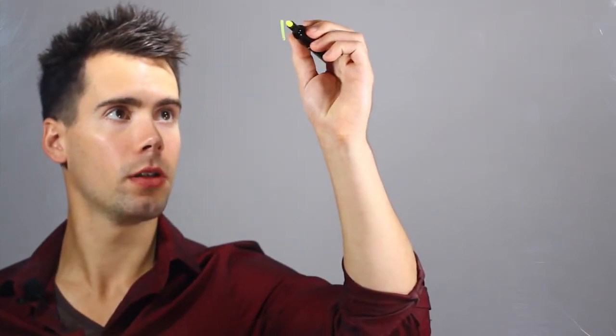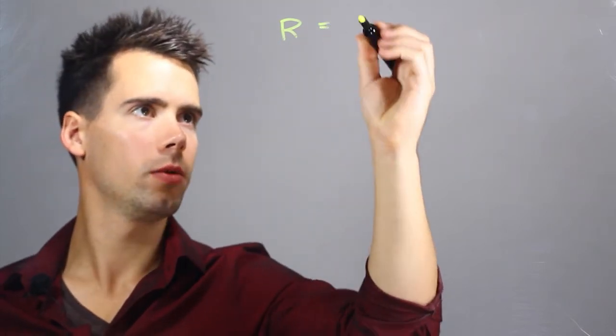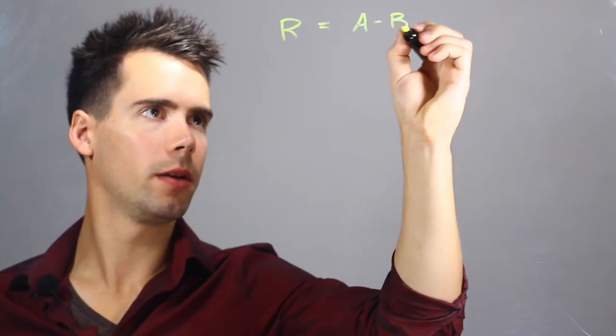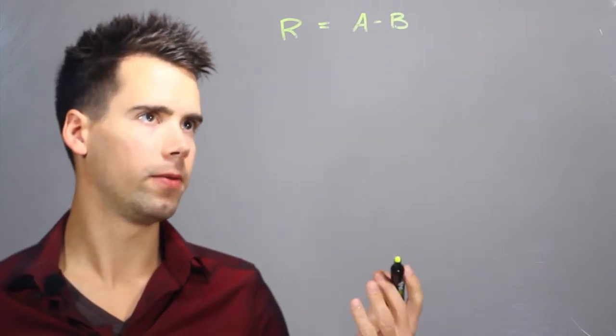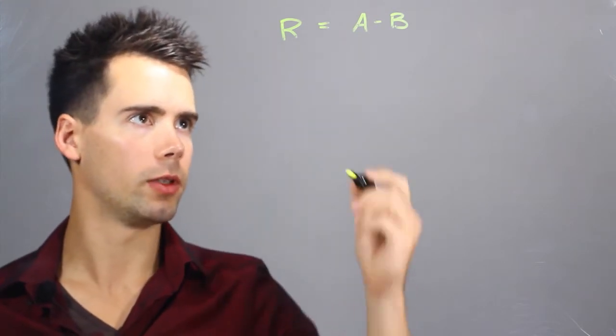Now you can write an equation. You can say R, which is your result, is equal to A minus B. Now normally this is fine, but if B happens to be a negative number, it changes it up so it's a little bit different.